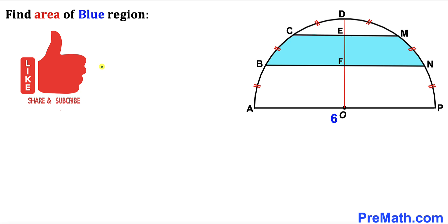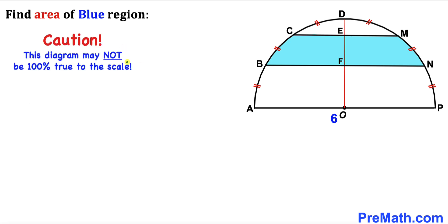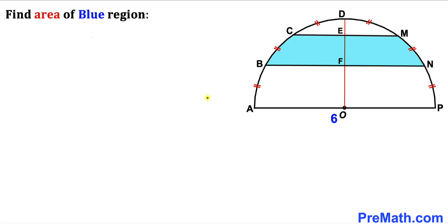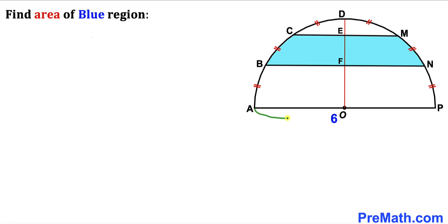Please don't forget to give a thumbs up and subscribe, and keep in mind that this figure may not be 100% true to scale. Let's get started. We know the diameter of this semicircle is six units, so the radius is going to be half of that — three on this side and three on this side as well.